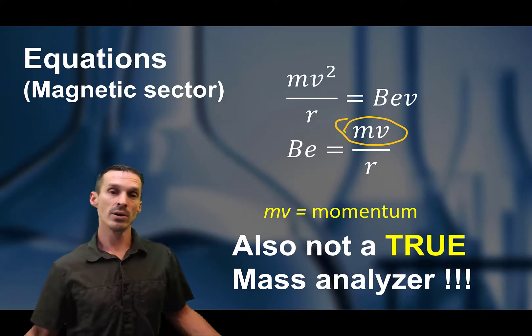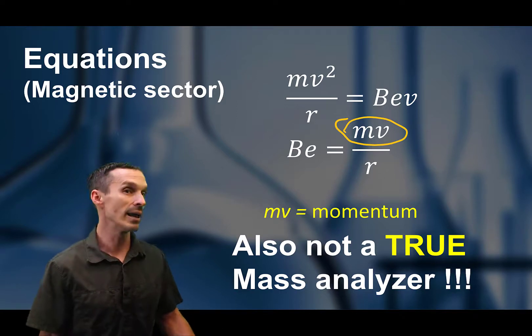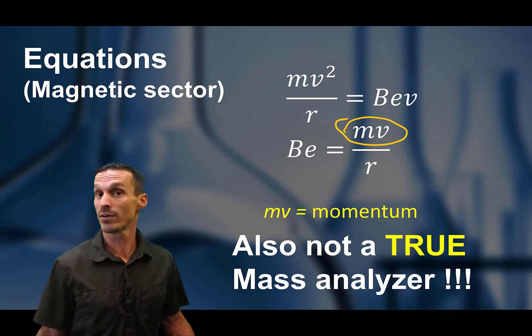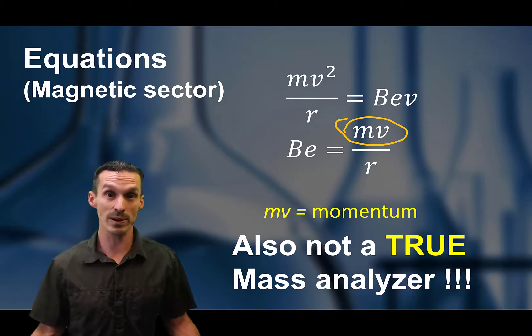So mv represents momentum. And in other words, we're not dealing with a mass spectrometer again. A magnetic sector, believe it or not, is not a mass spectrometer.